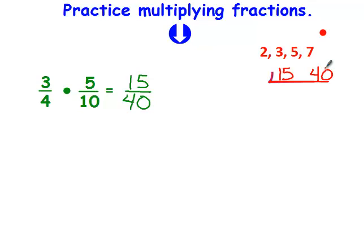And I run it through 2, 3, 5, and 7, the magic numbers. They both end in a 5 or a 0, so I'm going to divide by 5. 5 goes into 15 three times. 5 goes into 40 eight times. I try it once more.